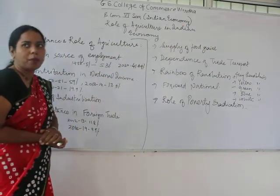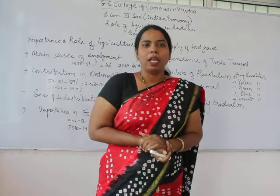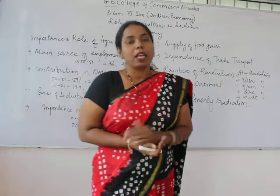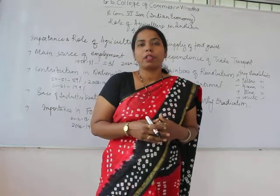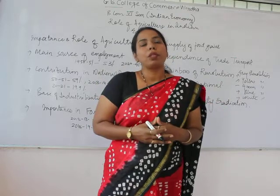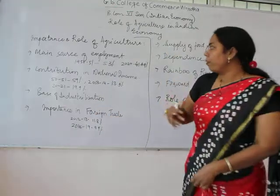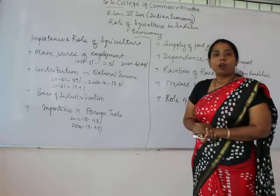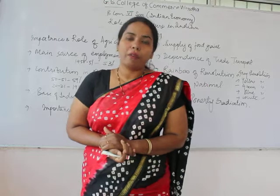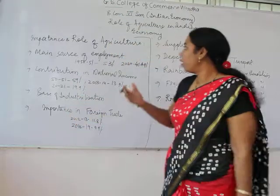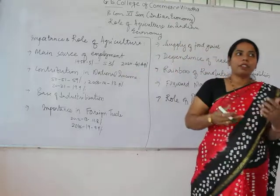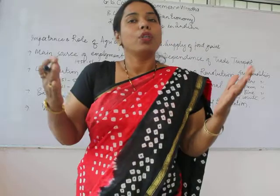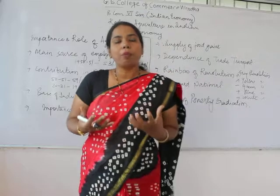The first aspect is that agriculture is the main source of employment. As we all know, there is a problem of large-scale unemployment in India. But from the perspective of agriculture, it provides employment to a large number of people. If you look at certain statistical data, in 1950-51, around 72% of the population was engaged with agriculture. Data released in 2020 tells us that 41.49% of the population in India is still linked with agriculture. So agriculture is the main provider of employment.